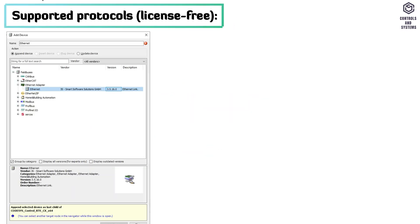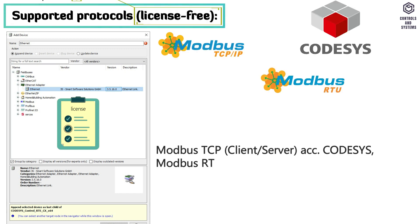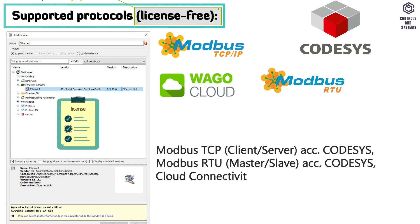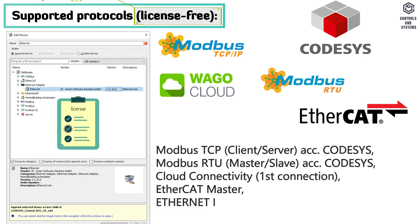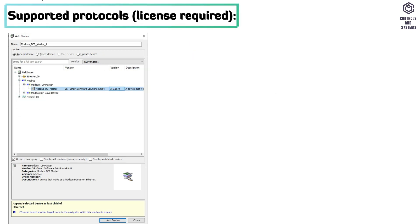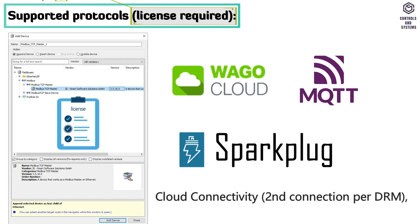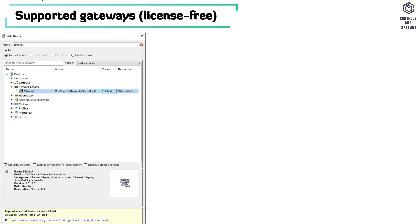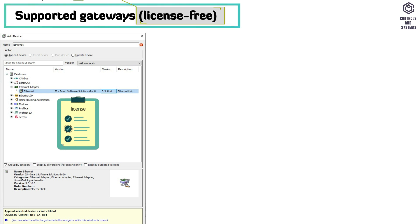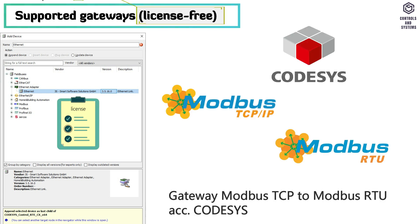Fieldbus supported protocols — license free: Modbus TCP, Modbus RTU, cloud connectivity, EtherCAT master, Ethernet/IP adapter and scanner. Supported protocols — license required: cloud connectivity, MQTT Sparkplug. Supported gateways — license free: gateway Modbus TCP to Modbus RTU.